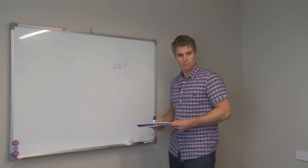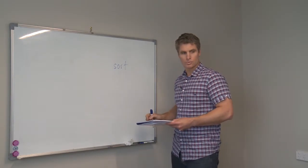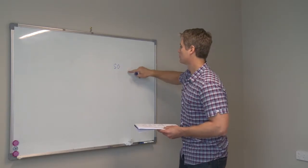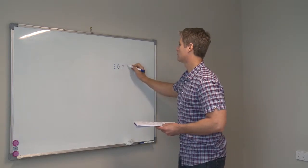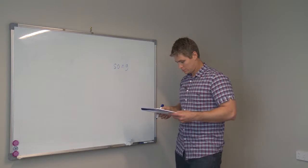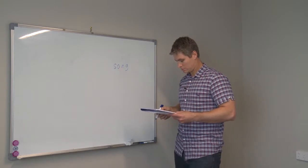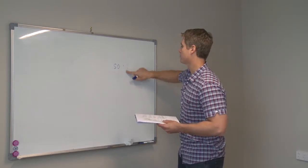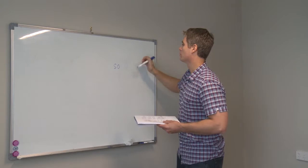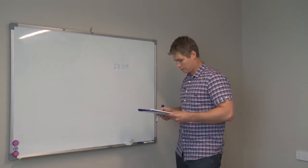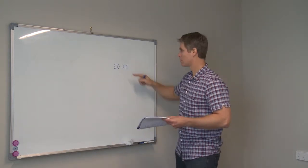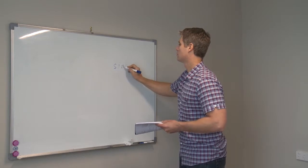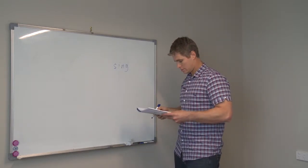What word? S, or, t — sword. S, R, U — song. Good, and you don't have to sound it out if you already know the word. You already know it, just say it. S — sing.